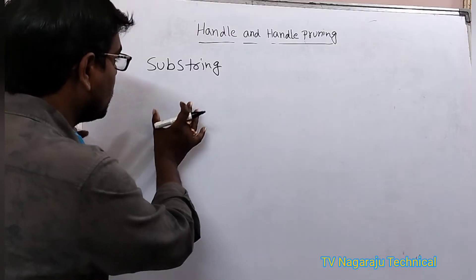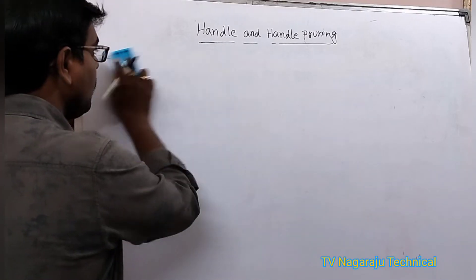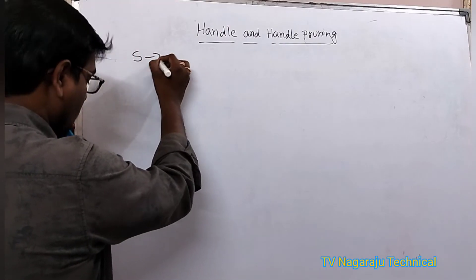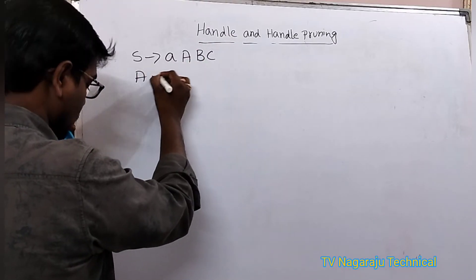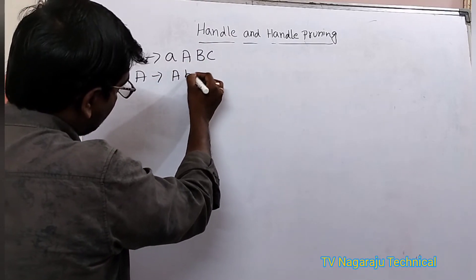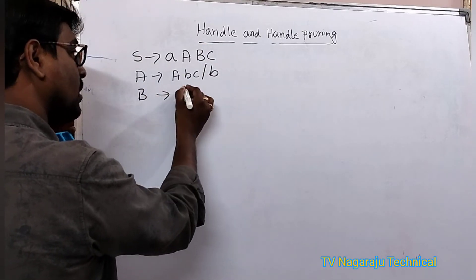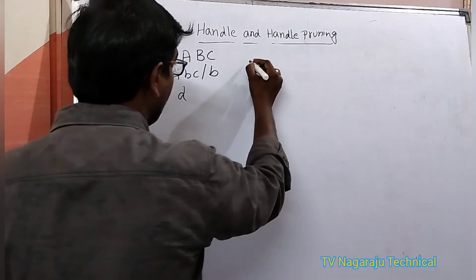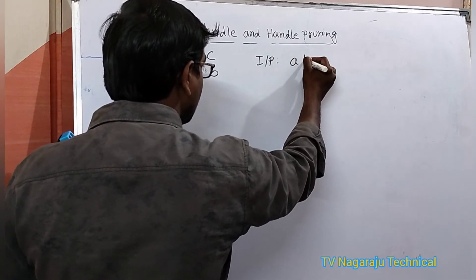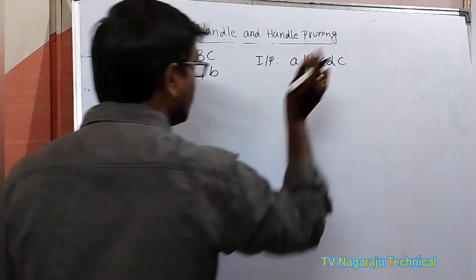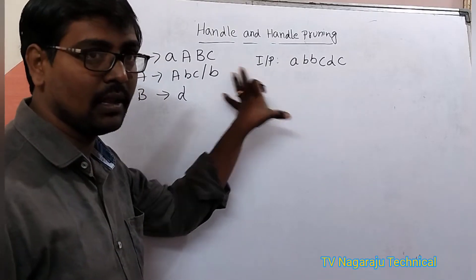I will explain this with an example, then it will be very easy. Consider a grammar: S tends to A A B C, A tends to A B C or some, B tends to B. Assume this is the given grammar and the input string is a b b c d c.